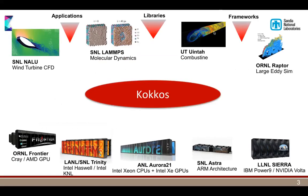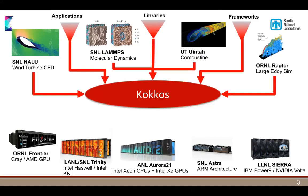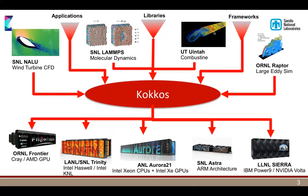The problem on top of that is we have all these different machines, and all of them now want their own programming model — in particular, the new exascale machines. Instead of everybody doing that porting effort for every one of these machines, the idea is that everybody writes to Kokkos, and then Kokkos maps that to the underlying architectures.